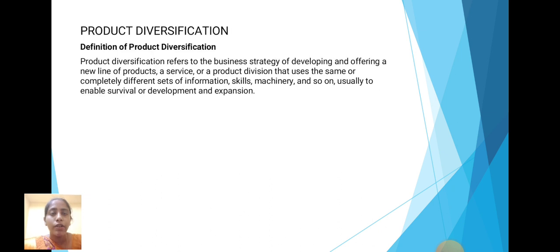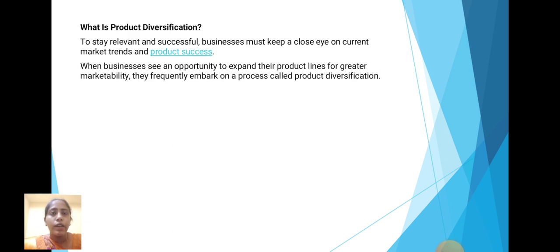Next one: Product Diversification. Definition of product diversification: product diversification refers to the business strategy of developing and offering a new line of products, a service, or product divisions that use the same or completely different set of resources, skills, machinery and so on, usually to enable survival, development and expansion. To stay relevant and successful, businesses must keep a close eye on current market trends and product success. When businesses see an opportunity to expand their product lines for greater marketability, they frequently embark on the process called product diversification.